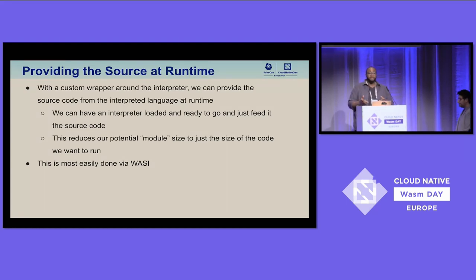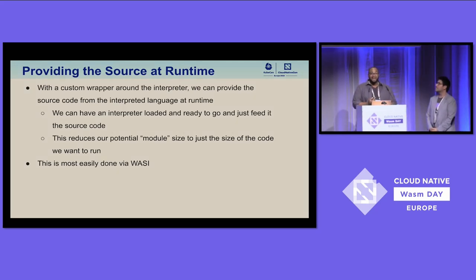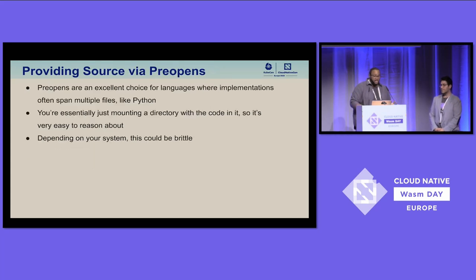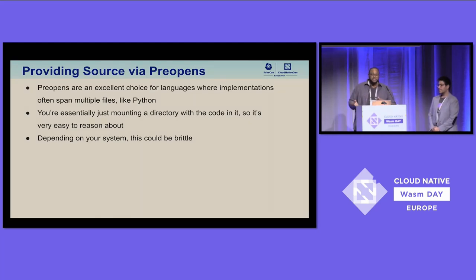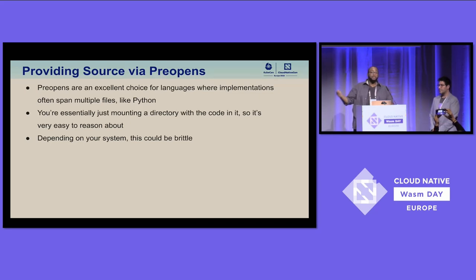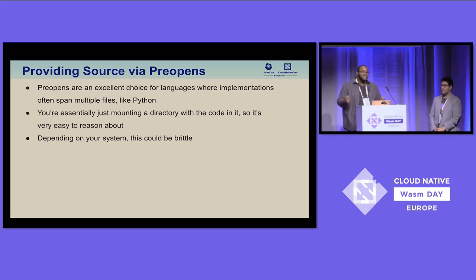Having the interpreter ready to go also helps with speed and performance, since a lot of computation time is spent compiling that huge interpreter. The easiest way to provide source code at runtime is via WASI. One approach is preopens — you have your interpreter running and you simply say: preopen this directory that has the user's code in it. In a language like Python that loves the disk, this works really well.